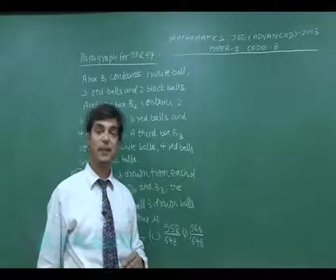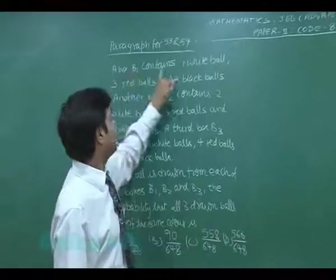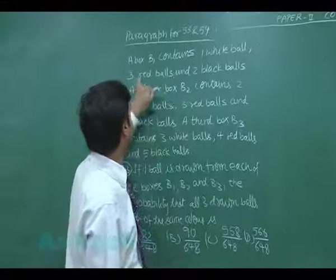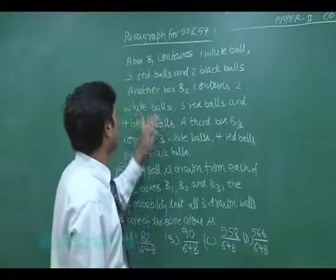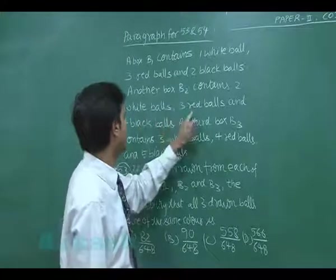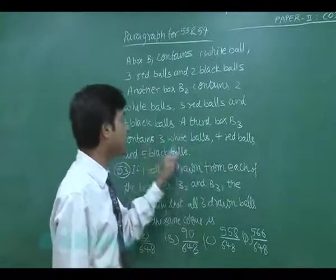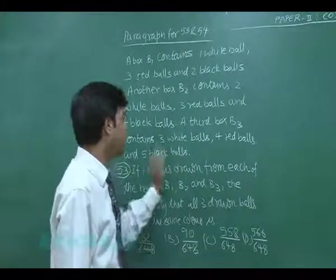Now, the paragraph for question number 53 and 54. A box B1 contains 1 white, 3 red and 2 black balls. Another box B2 contains 2 white, 3 red and 4 black balls. A third box B3 contains 3 white, 4 red and 5 black balls.